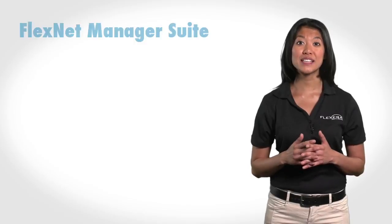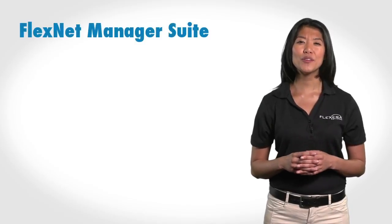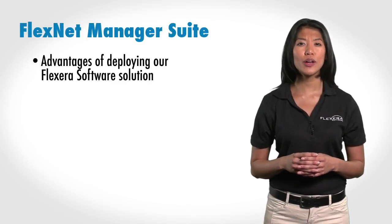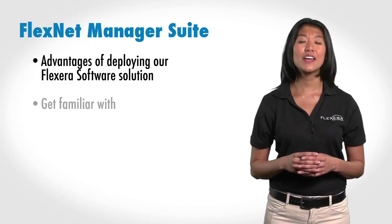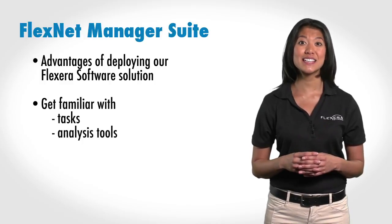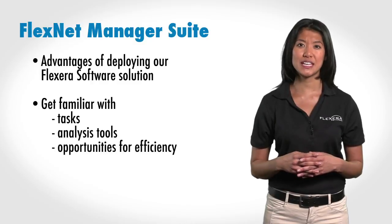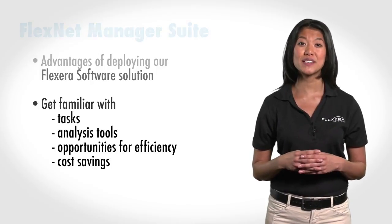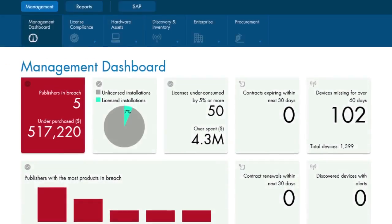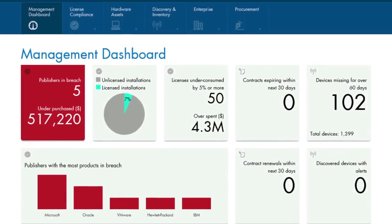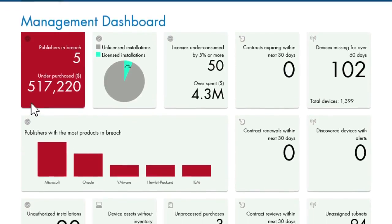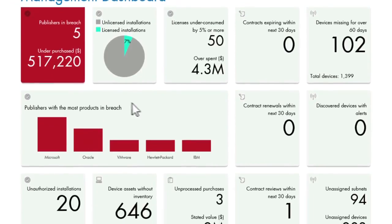In this first module in our five-part tour of the FlexNet Manager Suite, we will briefly discuss the advantages of deploying our software license optimization solution and get familiar with the tasks, analyses, opportunities for efficiency, and cost savings possible with its management dashboard. Not only can you handle asset management tasks that once took hours — days even — with just a few clicks, but you can strategically manage the financial, contractual, and operational aspects for your organization to have optimal software licensing at all times.